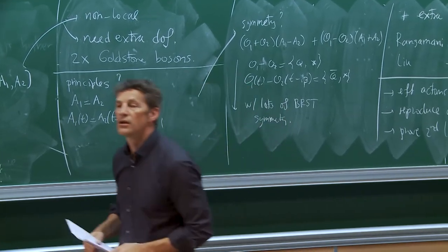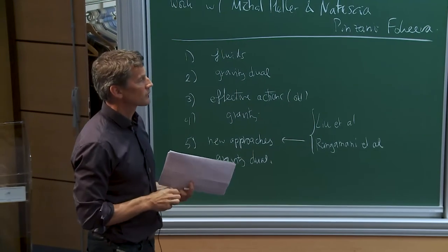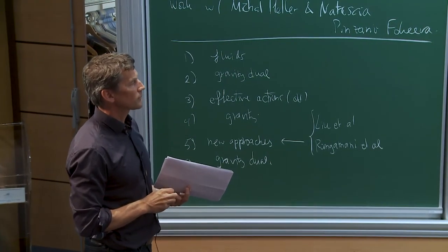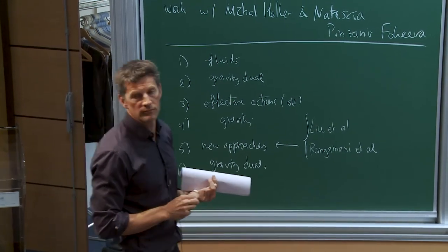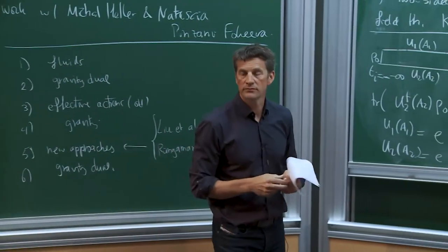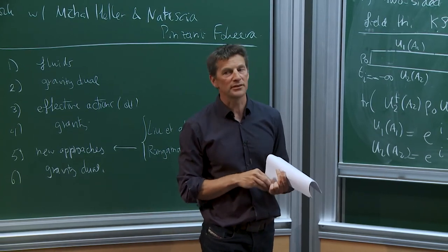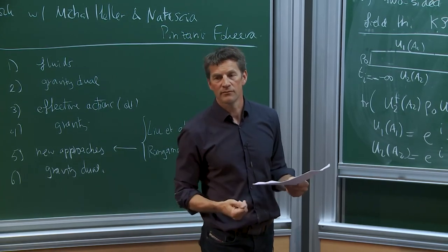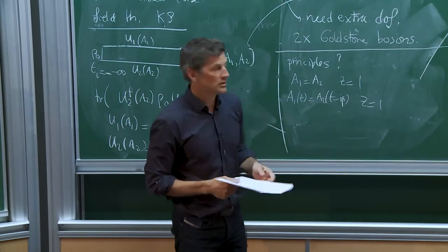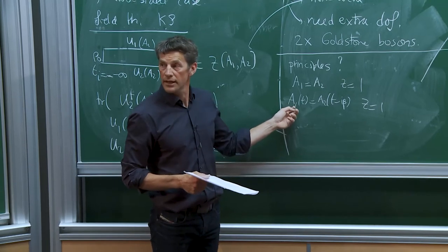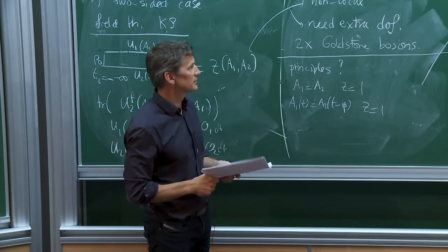Two further remarks: one of these two identities — if A_1 = A_2 then Z = 1 — does not rely on the fact that rho_0 was a thermal density matrix; it would be true for any quantum system. But the second equation is characteristic of a thermal state. So one could potentially define this Q for any quantum system, though it's not clear how much that buys you without the thermal structure.